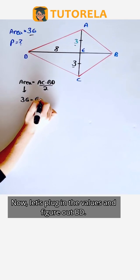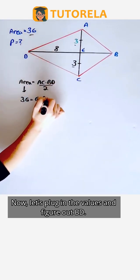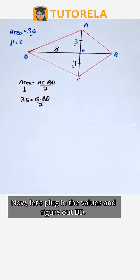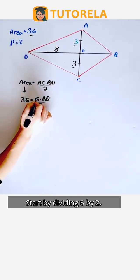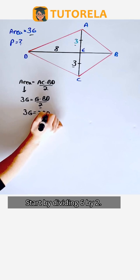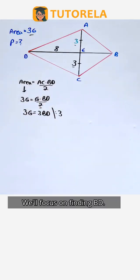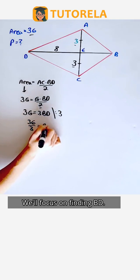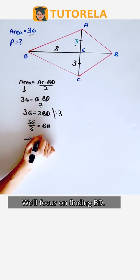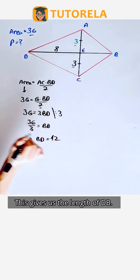Now let's plug in the values and figure out BD. Start by dividing six by two. We'll focus on finding BD. This gives us the length of DB.